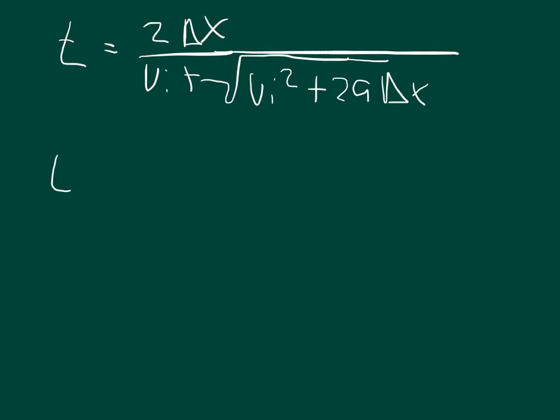And we can plug in numbers, so we have that the time is equal to 2 times the change of x, we said 29.8, divided by the initial velocity, we said was, and actually to be consistent, we'll call this a negative 29.8.